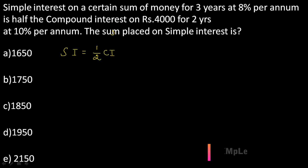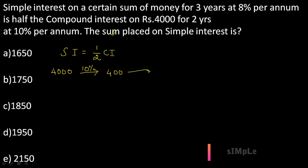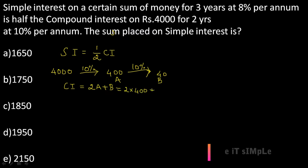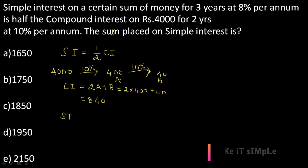First we will find compound interest. The sum given is 4000, and rate of interest is 10%. So 10% of 4000 is 400. Since it is for two years, we take 10% of 400 which gives 40. The compound interest formula for two years is 2a + b, where a = 400 and b = 40. So substituting: 2 × 400 + 40 = 840.